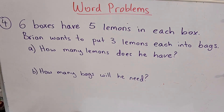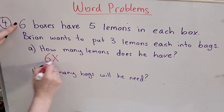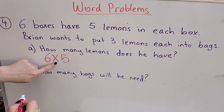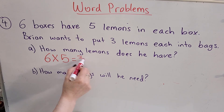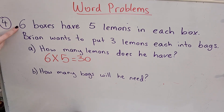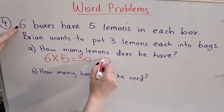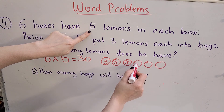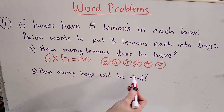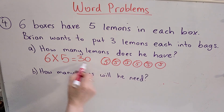Number 4 is a really fun juicy one because it has two questions. 6 boxes have 5 lemons in each box. Brian wants to put 3 lemons into each bag. How many lemons does he have? First we find the total lemons: 6 boxes times 5 lemons each — 5 times 6 is 30, so there are 30 lemons. You can also draw 6 boxes and write 5 in each, then count by 5s: 5, 10, 15, 20, 25, 30.